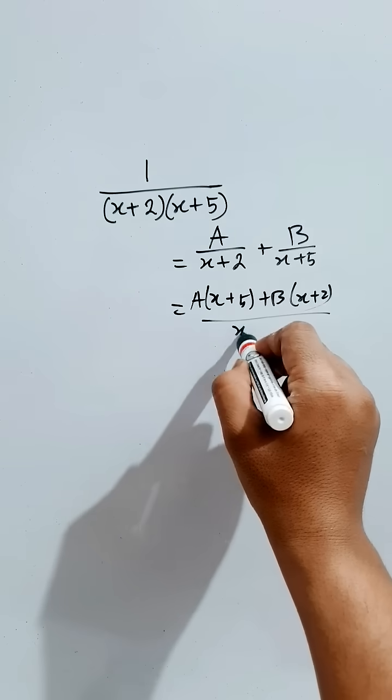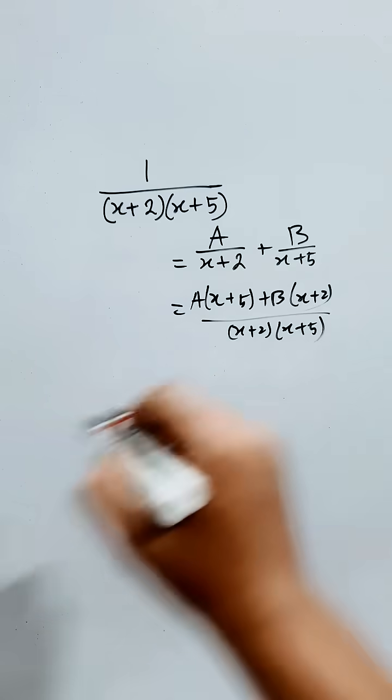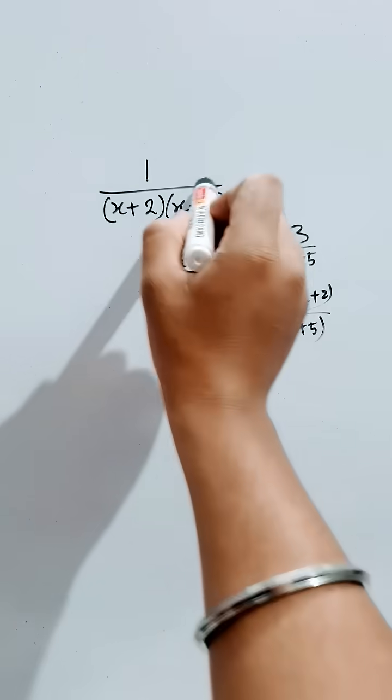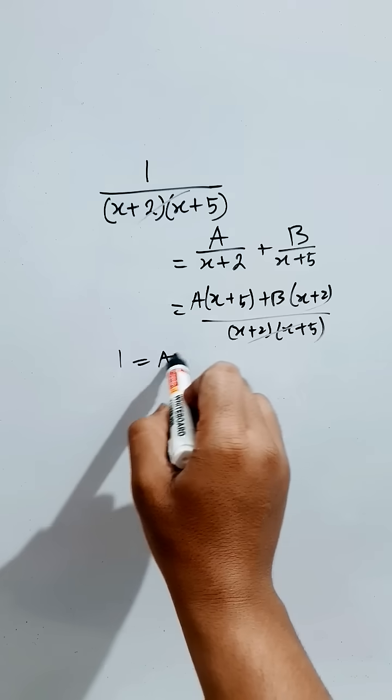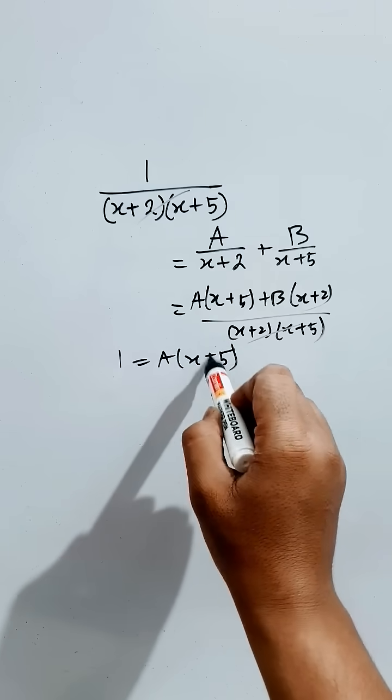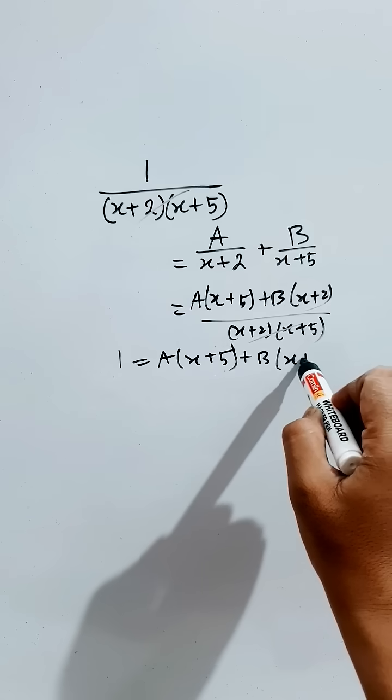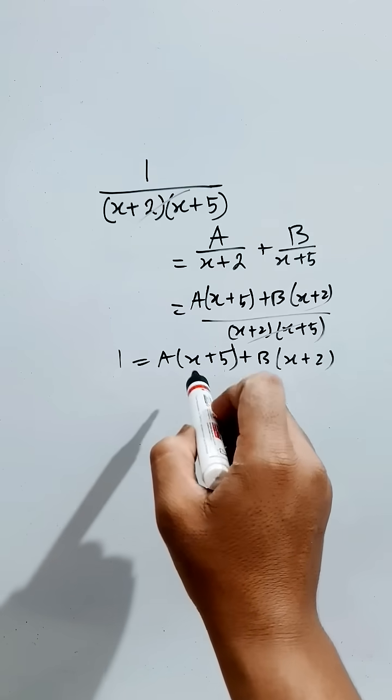Now these will be gone, then 1 will equal A into (x + 5) plus B into (x + 2). Now if you will put x equals to minus 5, then 1 equals B into (minus 5 + 2).